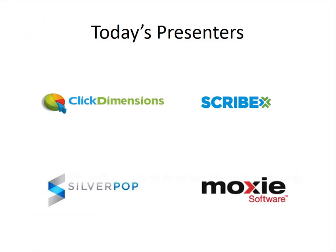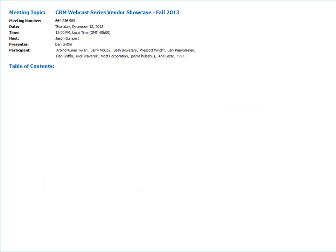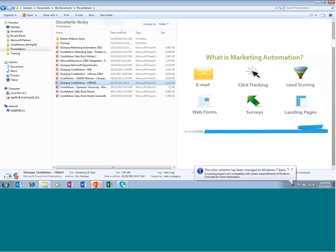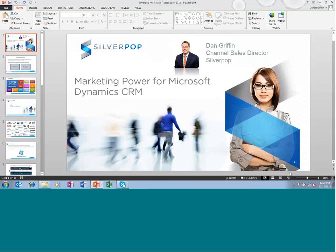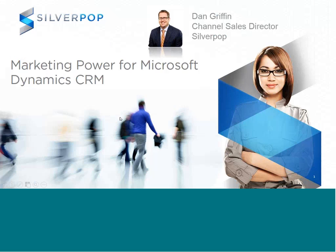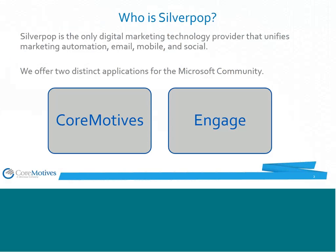Next is Dan Griffin, channel sales director for Silverpop, a marketing automation company. Silverpop offers two products for the Microsoft Dynamics CRM community: Core Motives, an embedded solution built completely within the Microsoft CRM platform leveraging the Azure cloud, and Engage, which lives outside of Microsoft CRM but is integrated using the Scribe Online platform.